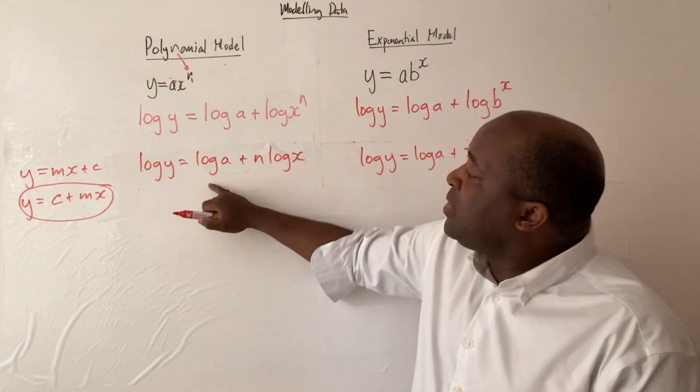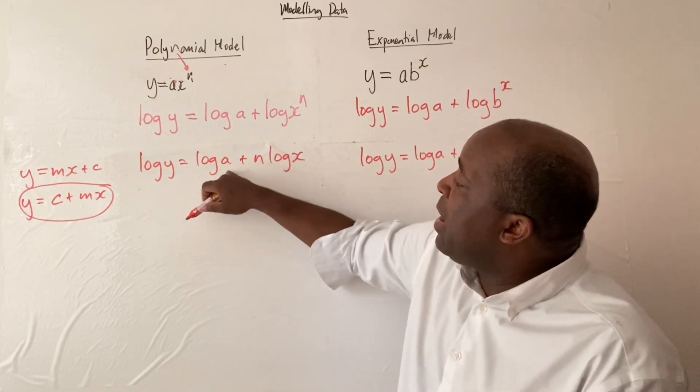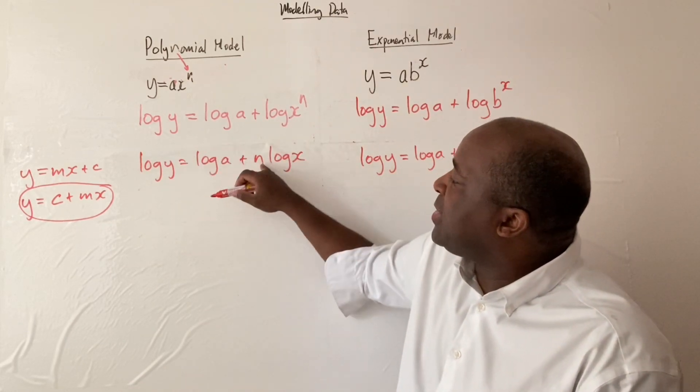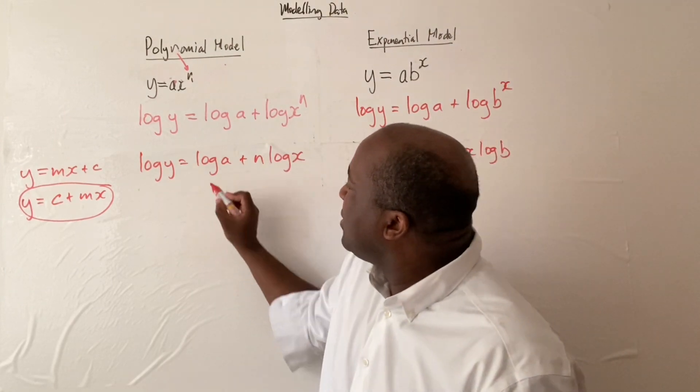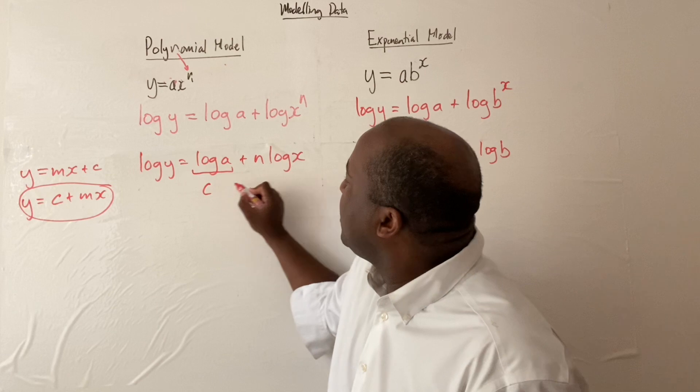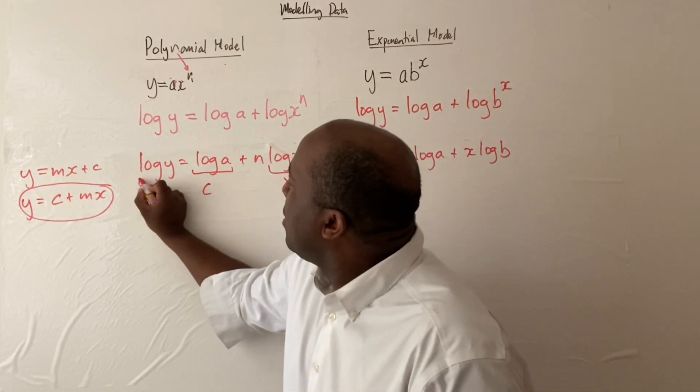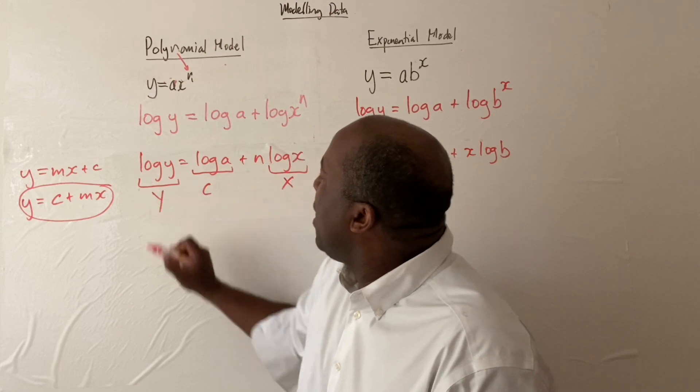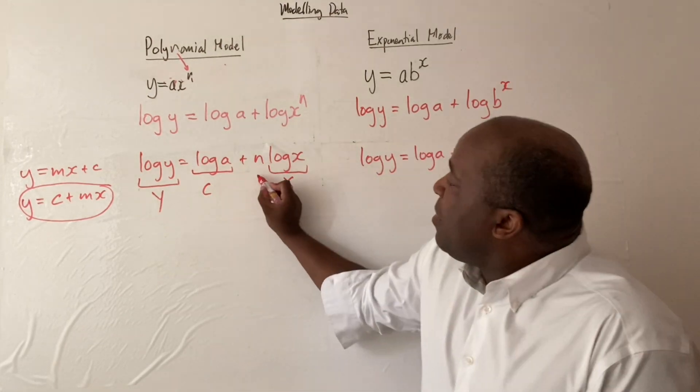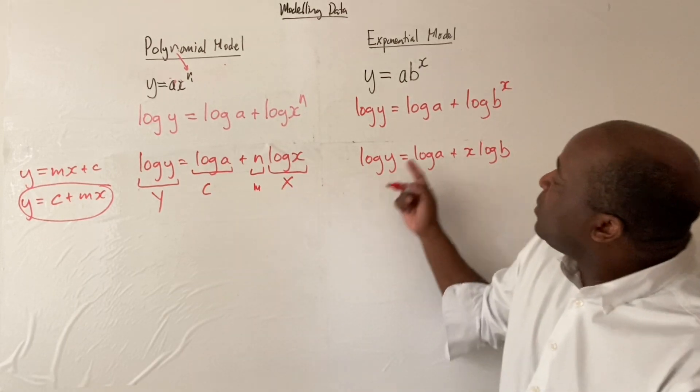We have the constant term, then we have the variable. This would be the y-intercept, and this would be the gradient. So that's our c, that's our x, and this is our y. And then this is our m.